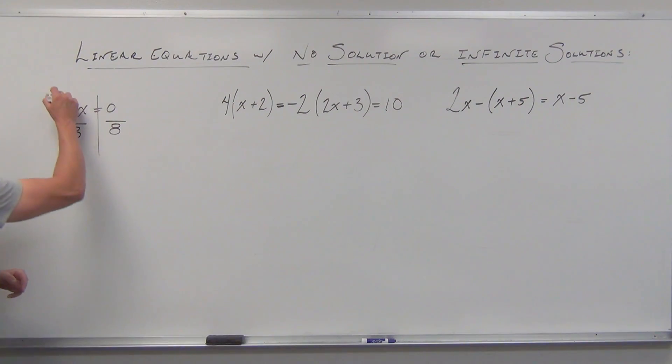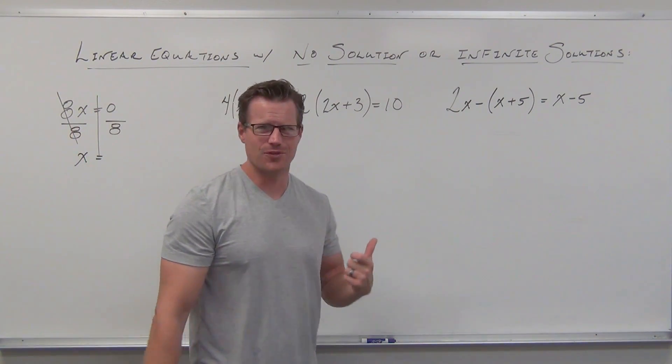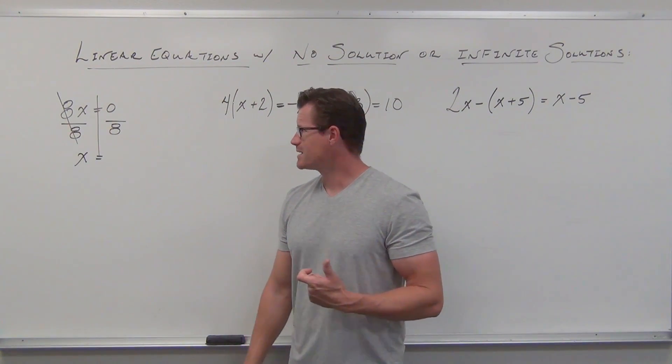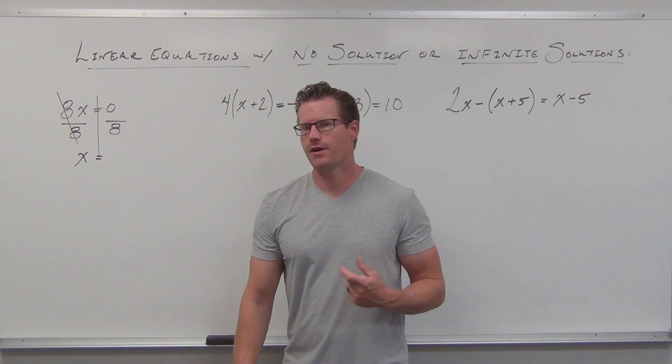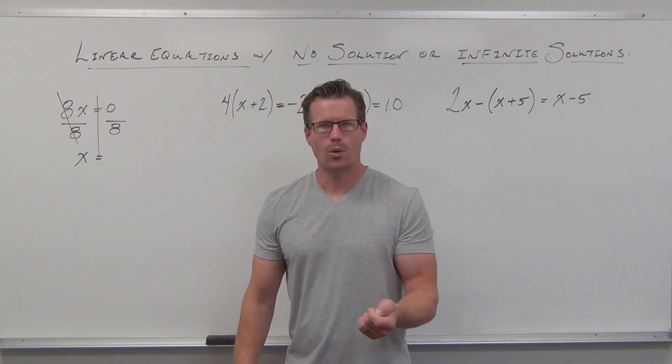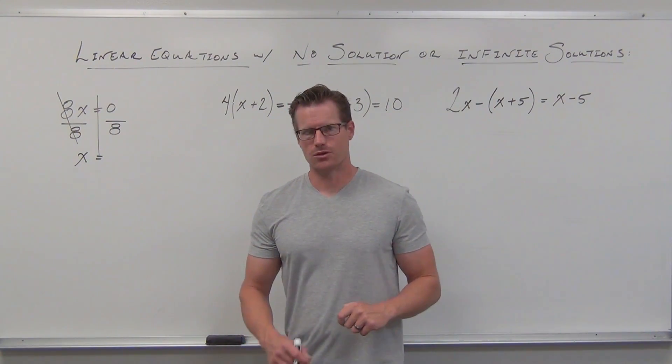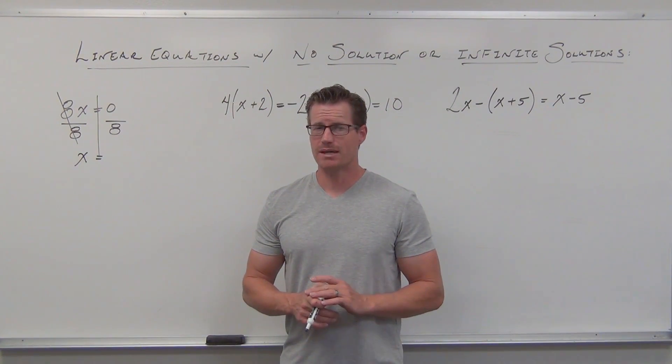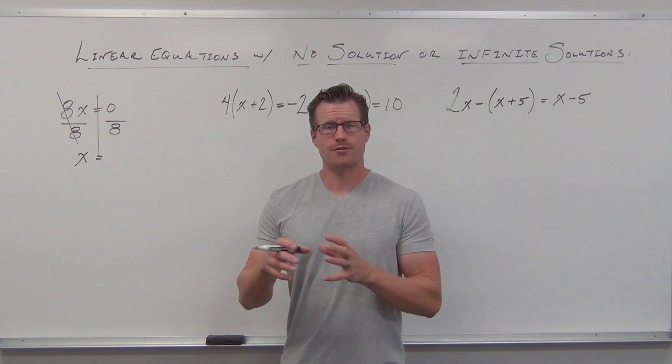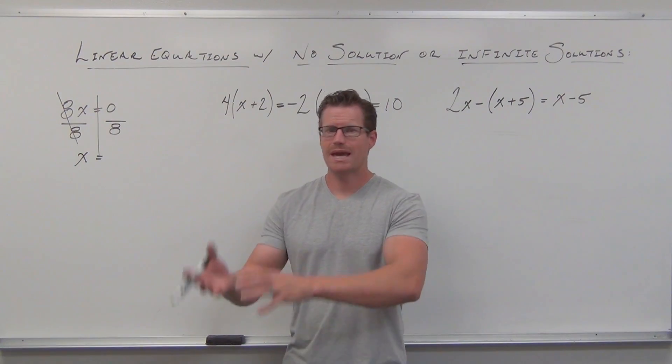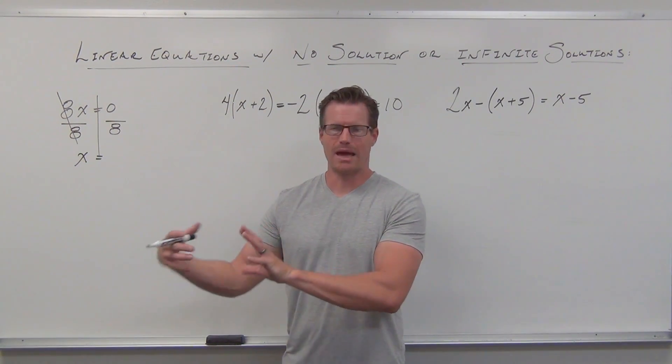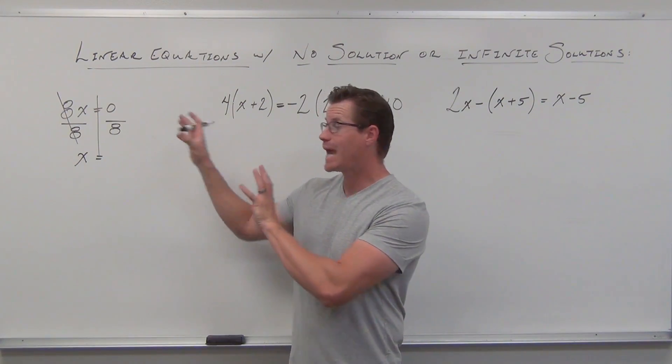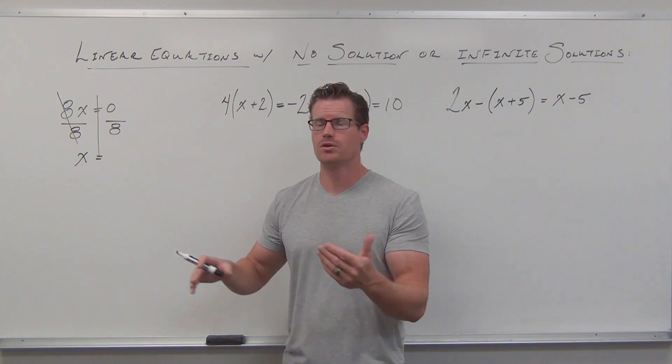If we have 8x equals zero, how do you get rid of the 8? 8 is connected to your variable by multiplication. Let's undo that. Remember with division, we're trying to get ones next to our variable. Eight divided by eight is one. One times our variable gives us back x. On the right-hand side, that looks a little funky. Can I divide zero by eight? Sure. Can you divide eight by zero? No, but that can't happen in linear equations. If you end up dividing by zero, then you don't have a variable to start with. But you can divide zero by a number.